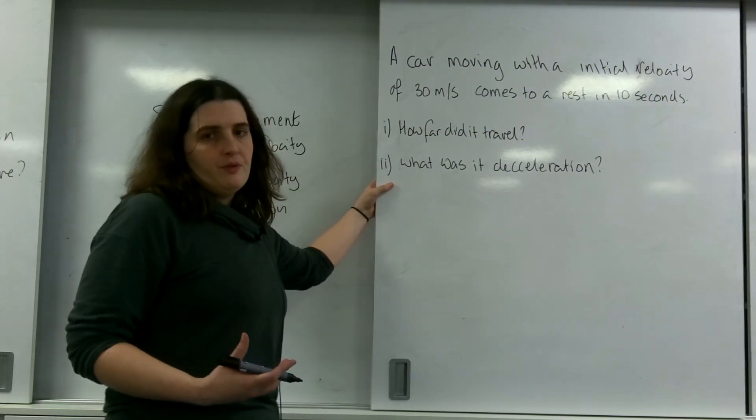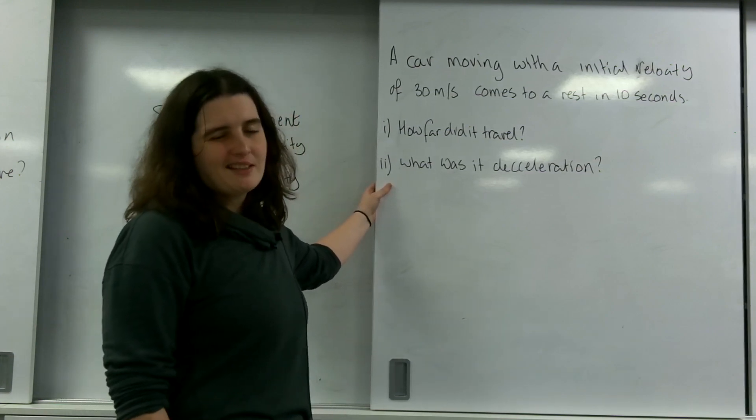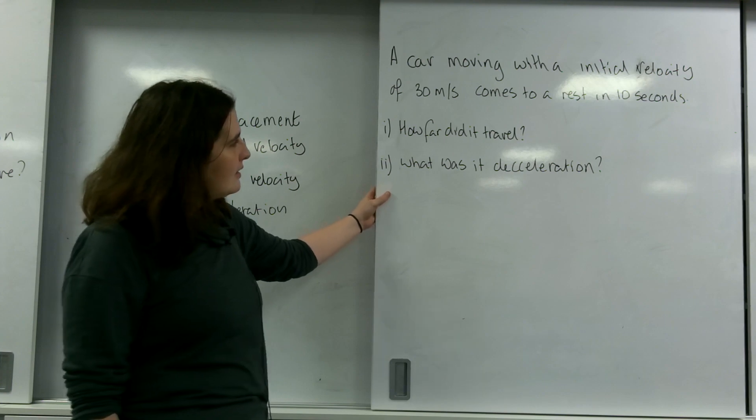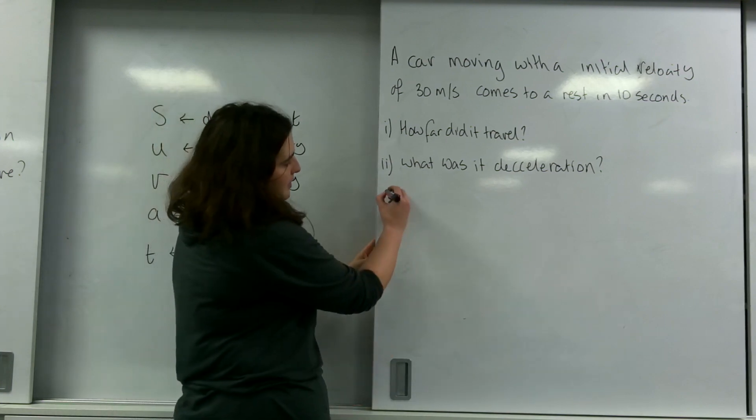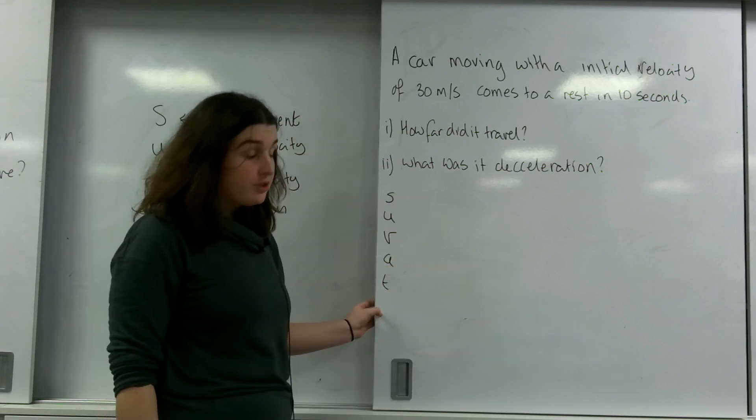Now, how you do SUVAT questions is, the easiest way to spot one a mile off is it starts talking about distance, speed and time. And how you start this, what I tend to do is I would write SUVAT down the side and I'd fill in what I know.